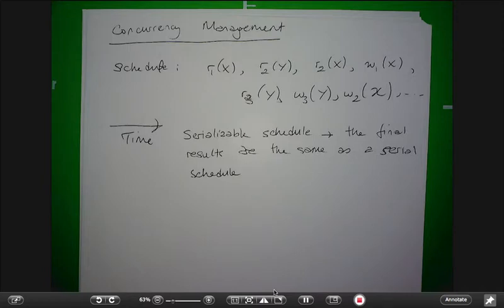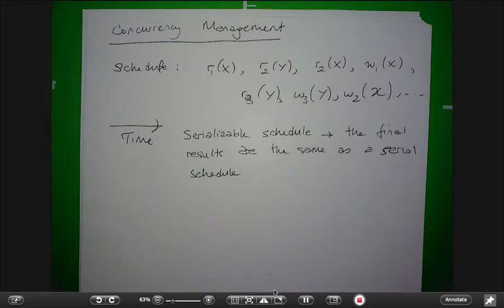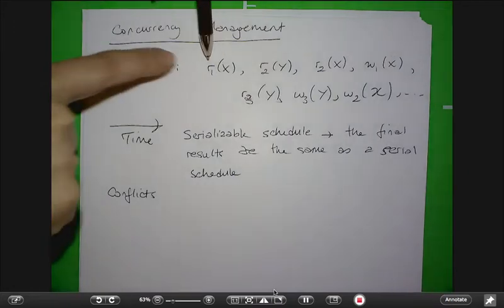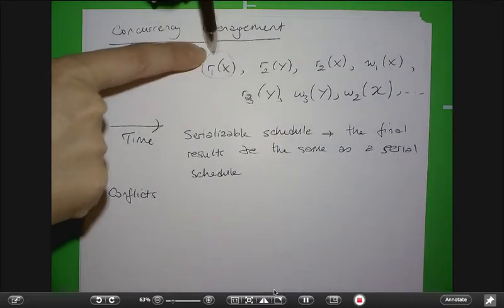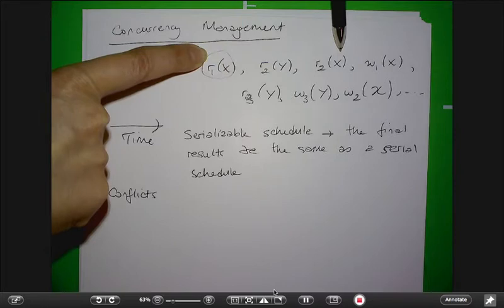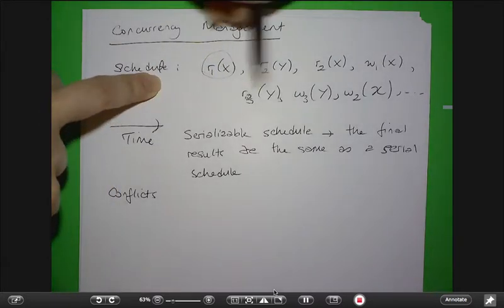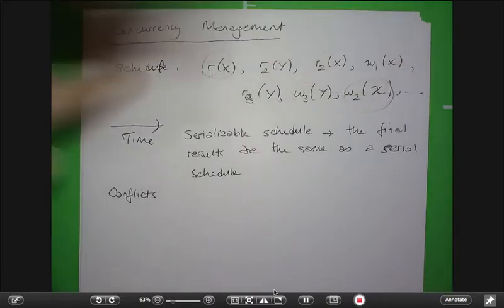It's very easy to find if things are serializable or not. What we can do is look at a schedule and look at all conflicting operations. A conflict is when one transaction reads something and another transaction writes the same thing, or both transactions write the same thing. For example, read-1 of X conflicts with write-2 of X.